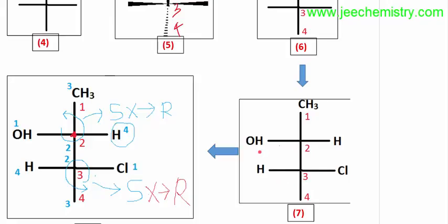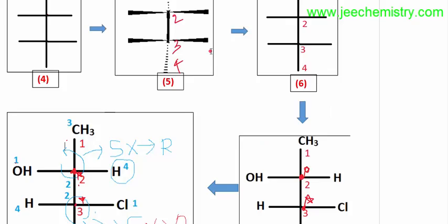Now, after placing the groups, we find the R/S configurations about these two chiral centers. First, provide priority for determining the R/S configuration: priorities 1, 2, 3, 4. The fourth priority group should be in the dash position. In the Fischer projection, hydrogen is in the base (vertical/dash) position, so whatever result we get from the normal process, the answer will be opposite.